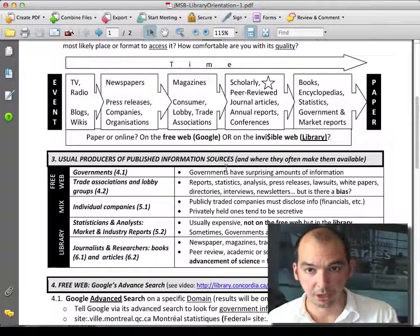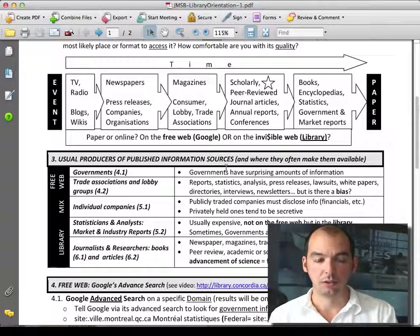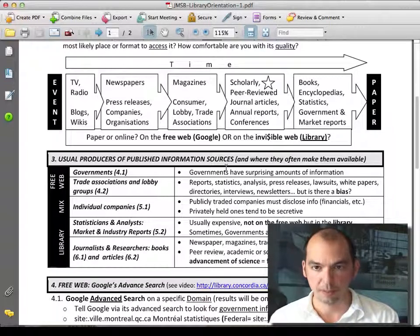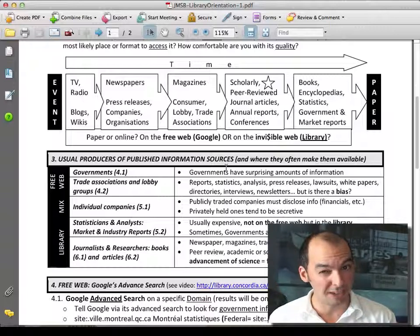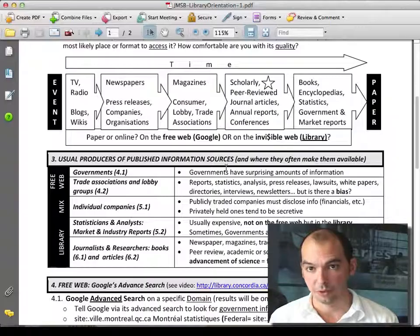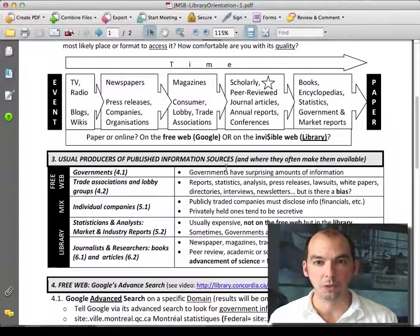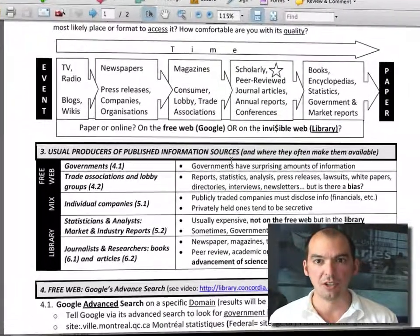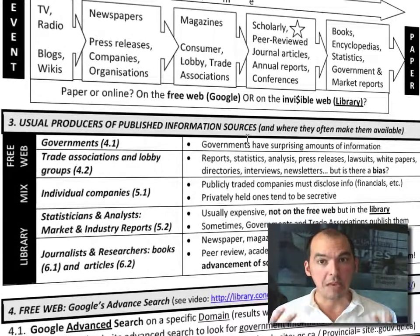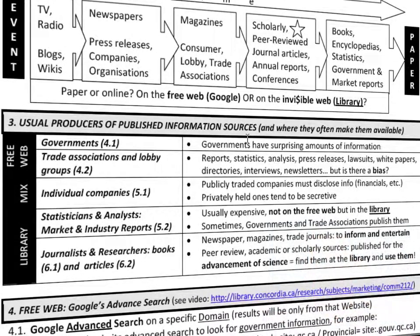Building on the information life cycle, what we have here are the usual suspects who produce information. If you boil it down, there are only five usual suspects you have to think about — sources: people, organizations, or entities that may provide you the answer to your question or the knowledge you need to write your paper or get good grades.